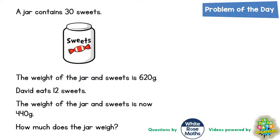Welcome problem solving fans to another problem of the day, and this one is all about David's jar of sweets. His jar of sweets contains 30 sweets. The weight of the jar and the sweets together, so that's the jar and the sweets, is 620 grams.